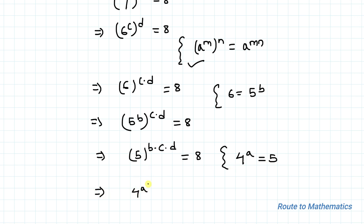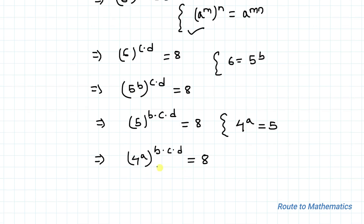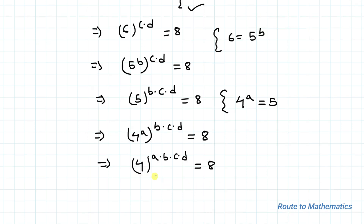From equation 1 we have 4 to the power a equals 5. Let's substitute the value of 5, giving us 4 to the power a, whole to the power b times c times d, equals 8. Applying the same exponential rule, we get 4 to the power a times b times c times d equals 8.